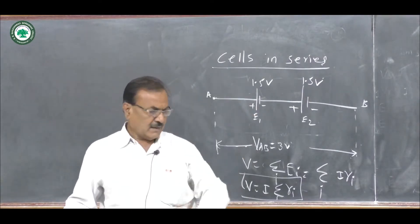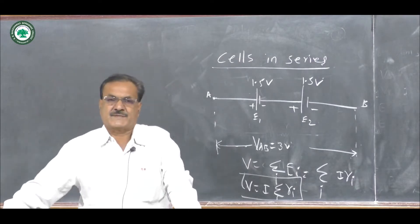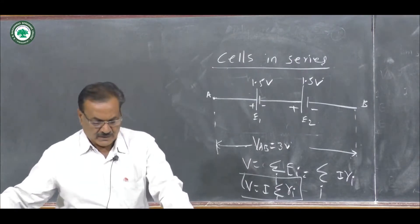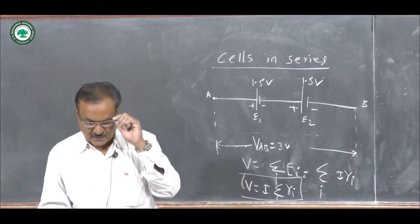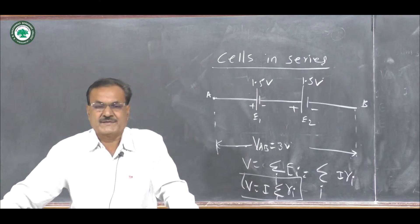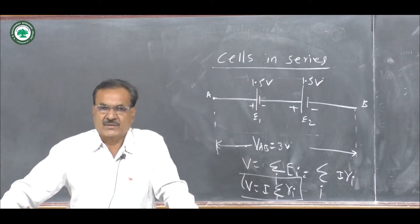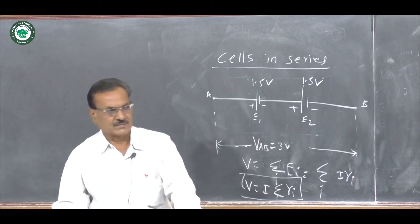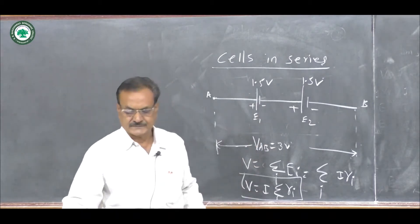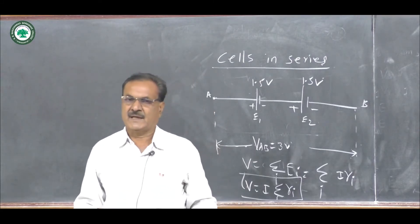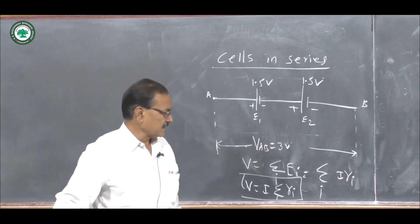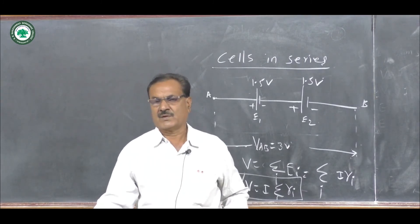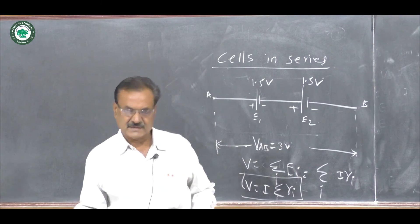The advantages of connecting cells in series: when cells are arranged in series, they produce a large resultant voltage. So for obtaining a large resulting voltage, cells are arranged in series combination. Another advantage is that if one of the cells in the series combination is damaged, it can be easily identified and hence such a cell can be easily replaced.